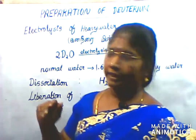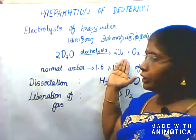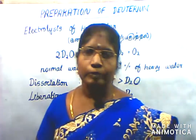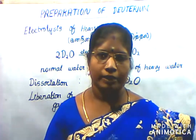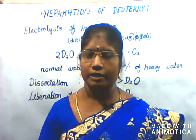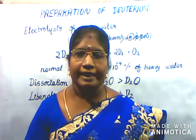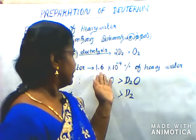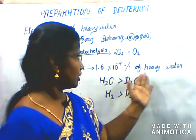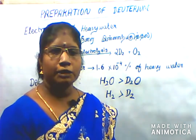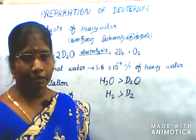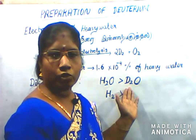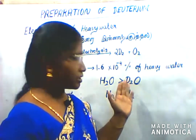What is deuterium? Let's look at the equation. The formula is 2D2O. If you have a dissociation, we can dissociate the water. For example, if you have heavy water, it's also called heavy water. For that, we need to do electrolysis in heavy water.